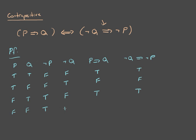If both P and Q are false, then their negations will be true. And if you have a false conclusion and a false premise, then it's true — the only time this is false was when the conclusion was false and the premise was true. The same applies here: both negations are true, so this is true. And you will see that we have agreement between all of these things.